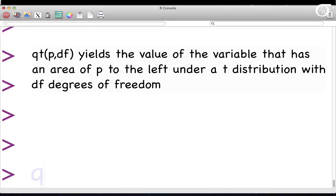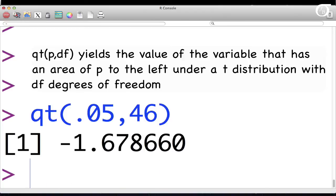So here we could say, please R, give us the 0.05th quantile, or in other words the 5th percentile, of a t-distribution with 46 degrees of freedom. And R tells me that, to 3 decimal places, that's minus 1.679.